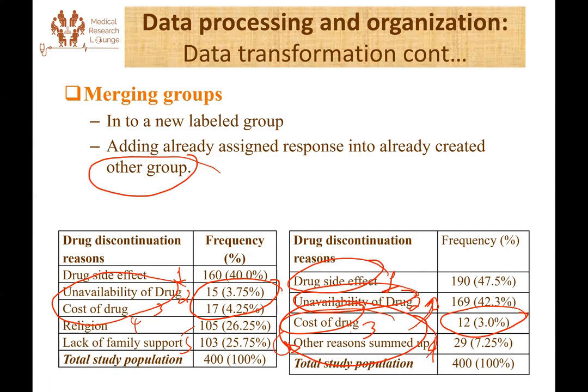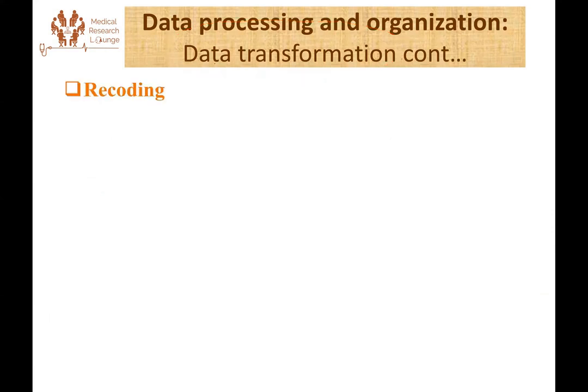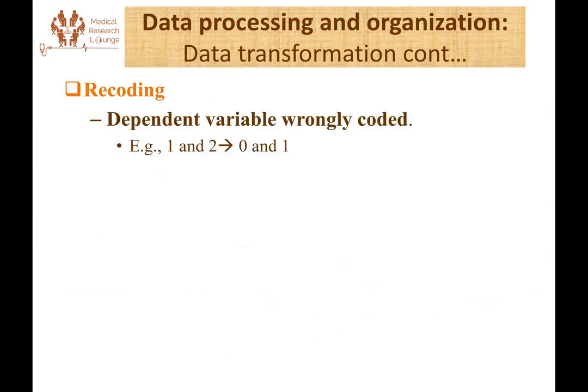When we merge and recode our data, we use the data transformation technique — there is a transformation command on statistical software for this. The last technique is recoding. Sometimes when there is an electronic database from an institution, the codes might not be as we want them. So we have to recode some variables so that they match our purpose of analysis.